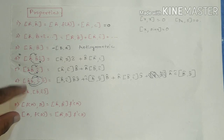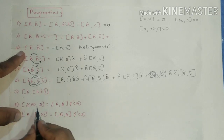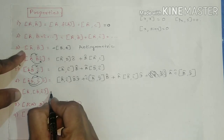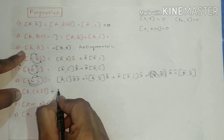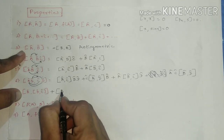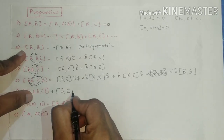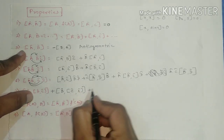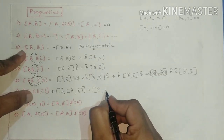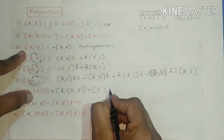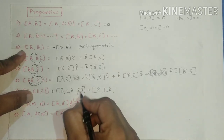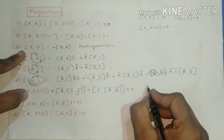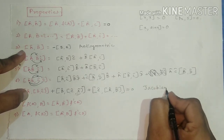Property number seven is also called the Jacobian identity. Here we have a commutator bracket inside another commutator bracket. We add terms in cyclic order: [A, [B, C]] + [B, [C, A]] + [C, [A, B]] = 0. This is the famous Jacobian identity.